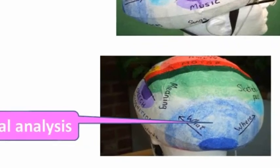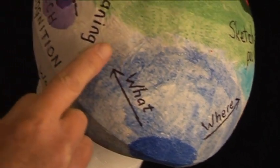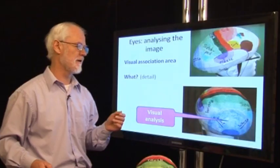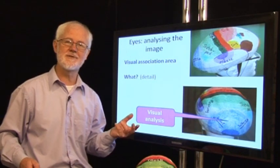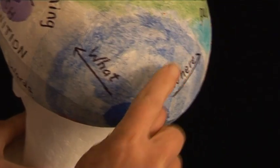And it does two separate jobs. On the left hand route we decide what it is that we are seeing. We could say it analyzes the detail. And on the right we look at the whole picture.